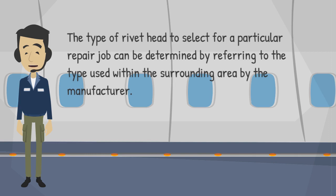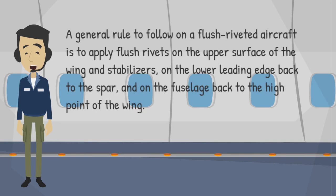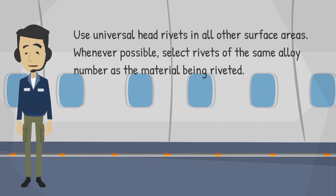The type of rivet head to select for a particular repair job can be determined by referring to the type used within the surrounding area by the manufacturer. A general rule on a flush riveted aircraft is to apply flush rivets on the upper surface of the wing and stabilizers, on the lower leading edge back to the spar, and on the fuselage back to the high point of the wing. Use universal head rivets in all other surface areas. Whenever possible, select rivets of the same alloy number as the material being riveted.